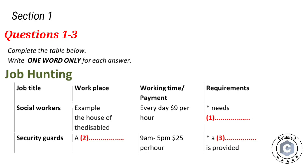Right, well let's just have a look at what positions are available at the moment. There is a job for social workers and the workplace is in the house of the disabled. The agent says that the workplace for social workers is in the house of the disabled, so 'disabled' has been written in the space. Now we shall begin. You should answer the questions as you listen because you will not hear the recording a second time. Listen carefully and answer questions 1 to 3.